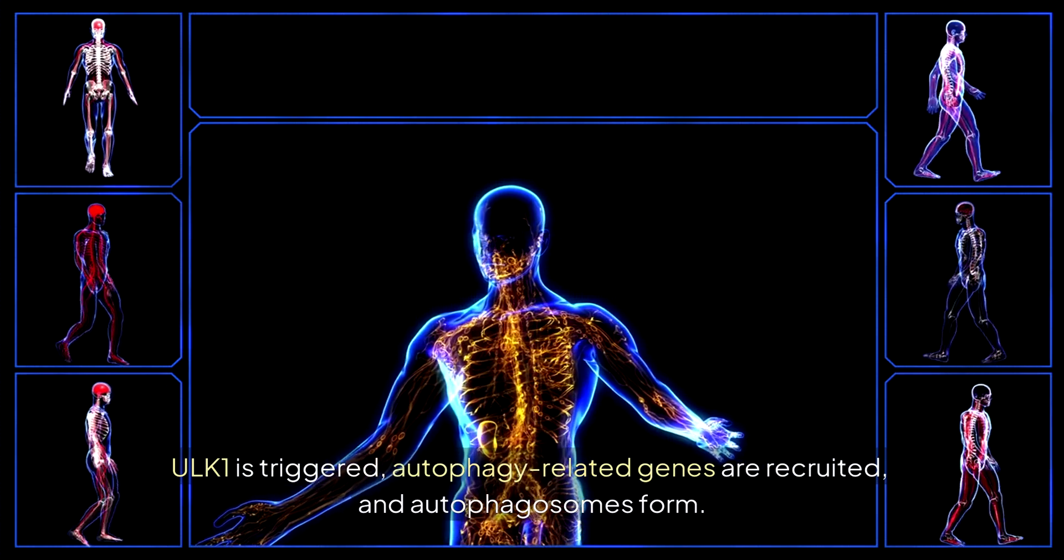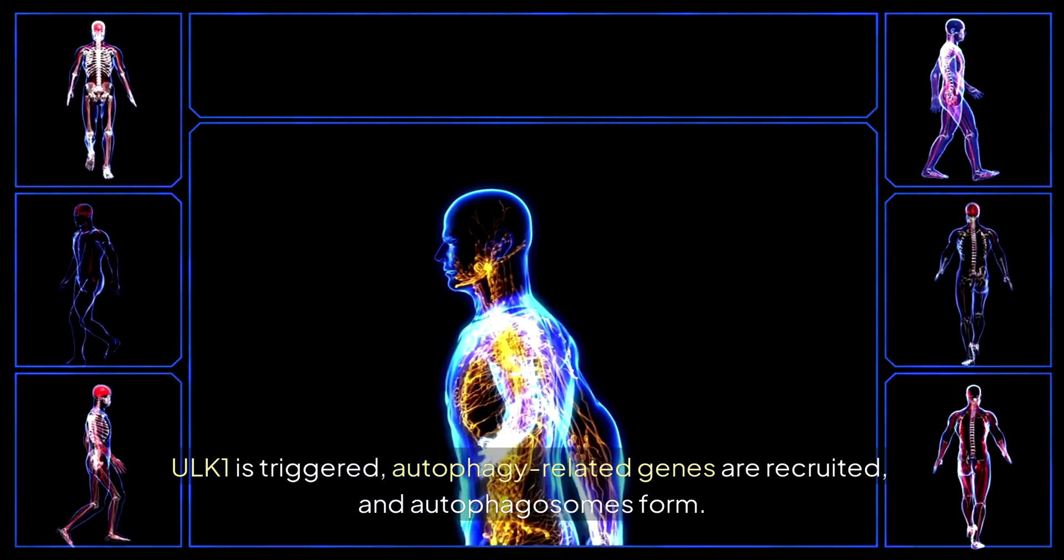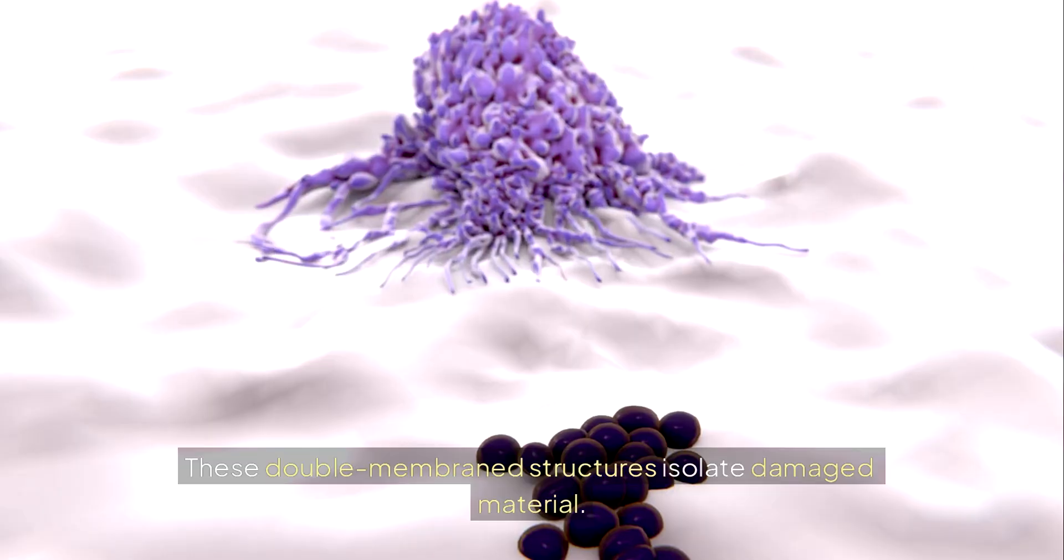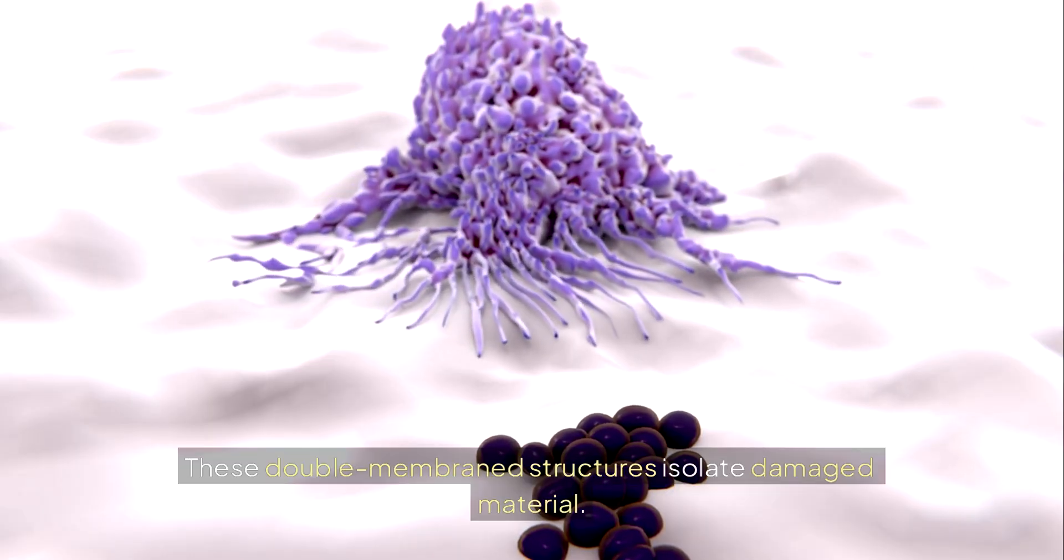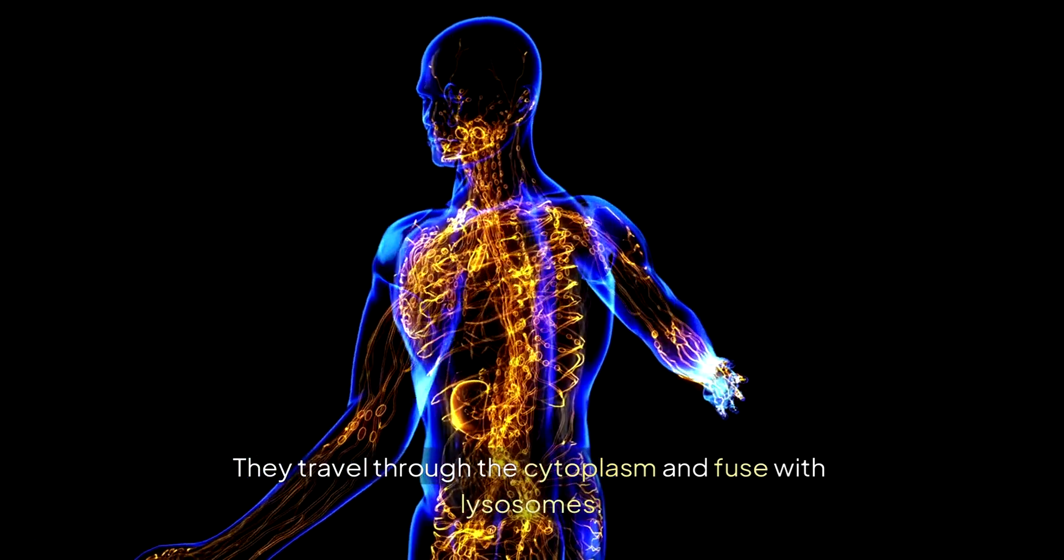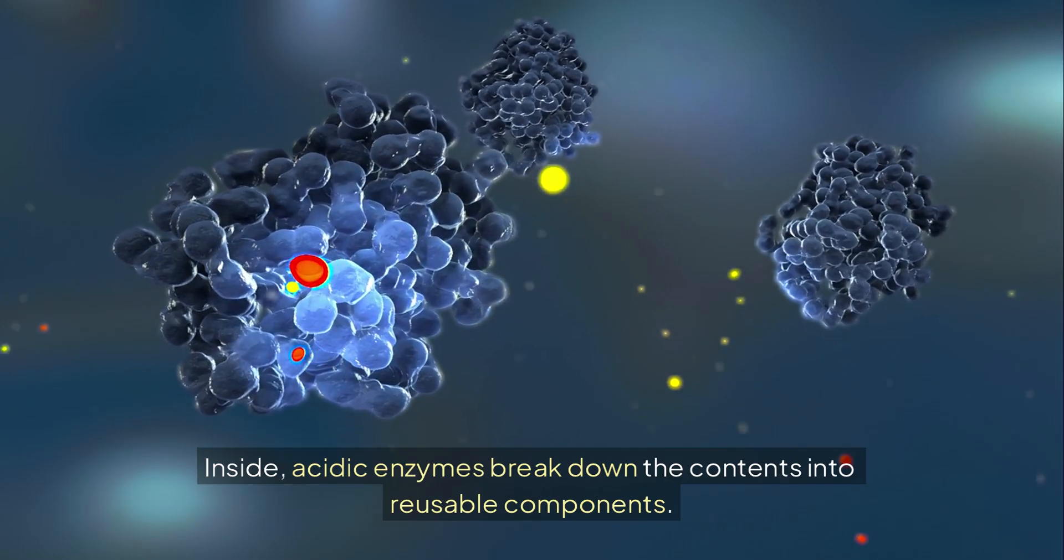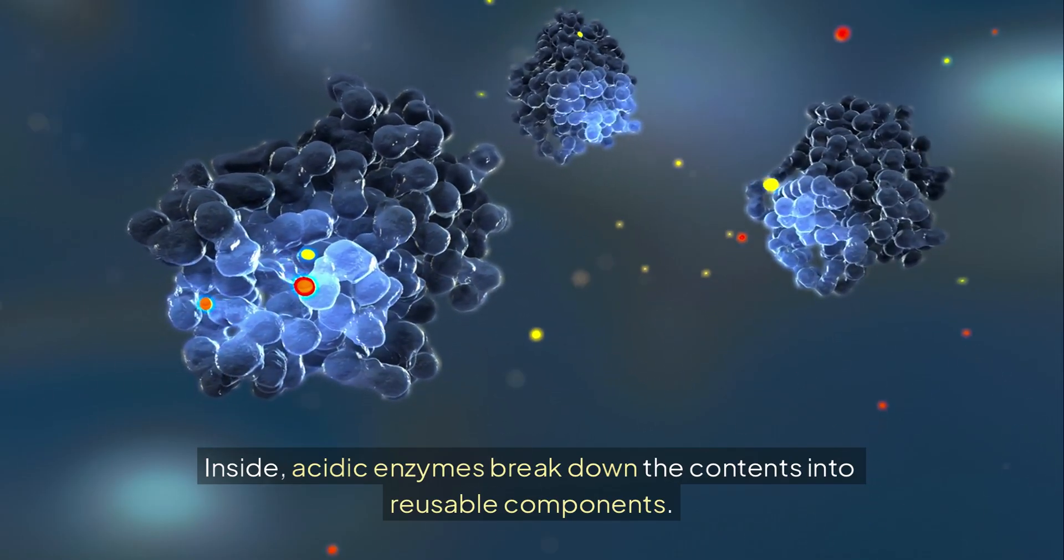ULK1 is triggered. Autophagy-related genes are recruited. Autophagosomes form. These double membrane structures isolate damaged material. They travel through the cytoplasm and fuse with lysosomes. Inside, acidic enzymes break down the contents into reusable components.